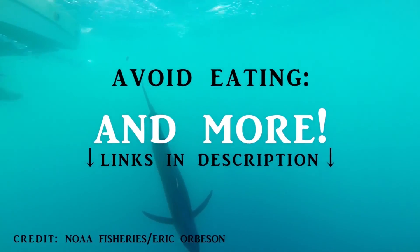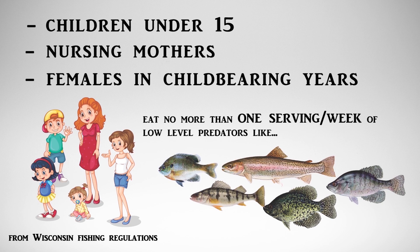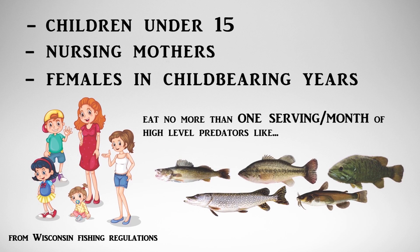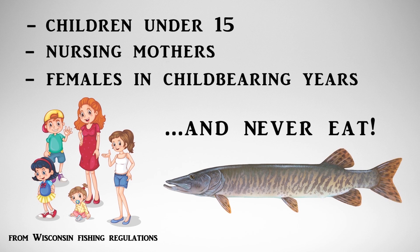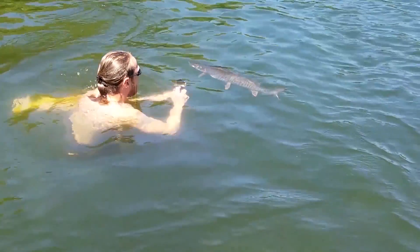Basically you're eliminating all the top predatory fishes. In the inland waters, it's recommended that children under 15, nursing mothers, and women in their childbearing years don't consume more than one serving per week of low-level predators like bluegill, perch, inland trout, and crappies, and only one serving per month of walleye, northern pike, largemouth bass, catfish, and other high-predatory species — and not to eat muskellunge at all. Something I would never do, not because I'm pregnant, but because I have too much respect for the fish and I release every one of them that I catch.